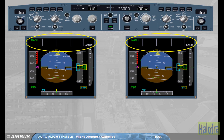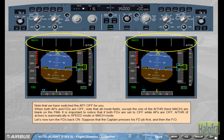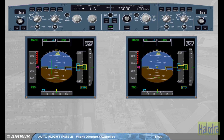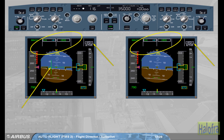Let's now turn the FDs back on. Suppose that the captain presses his flight director pushbutton first, and then the first officer. Flight director 1 is on. The crossbars are displayed on PFD 1. The FMA on both PFDs indicates flight director 1 engagement status, meaning that only flight director 1 is on, along with the flight director 1 associated modes. Notice that the flight director 1 pushbutton illuminates in green on the EFIS control panel.